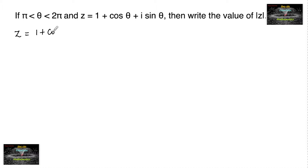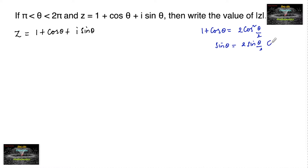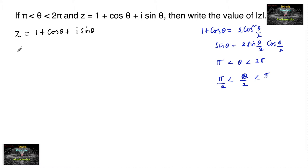z is equal to 1 plus cos θ plus i sin θ. Since we know that 1 plus cos θ is equal to 2 cos²(θ/2) and sin θ is equal to 2 sin(θ/2) cos(θ/2), and here θ lies between π and 2π, so θ/2 lies between π/2 and π, which is the second quadrant. So 1 plus cos θ becomes 2 cos²(θ/2), and i sin θ becomes 2i sin(θ/2) cos(θ/2).